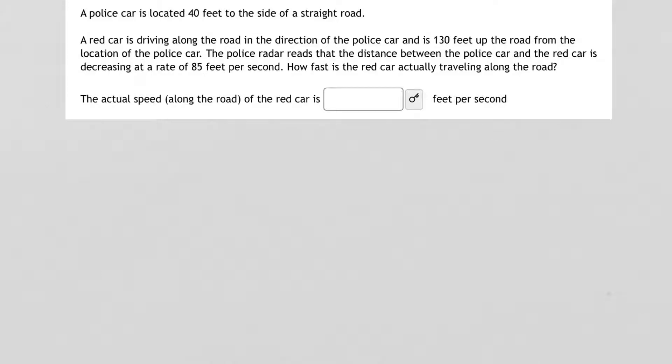A police car is located 40 feet to the side of a straight road. A red car is driving along the road in the direction of the police car and is 130 feet up the road from the location of the police car. The police radar reads that the distance between the police car and the red car is decreasing at a rate of 85 feet per second. How fast is the red car actually traveling along the road?